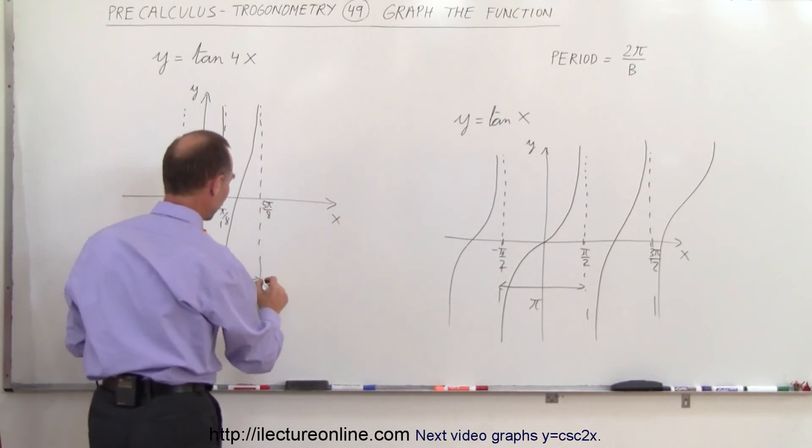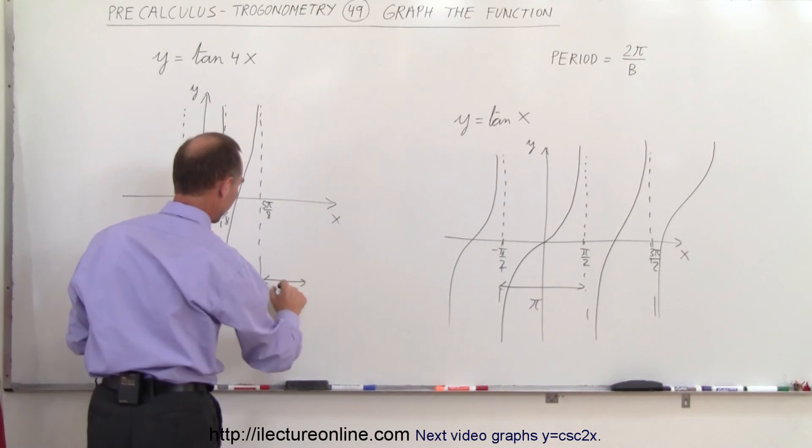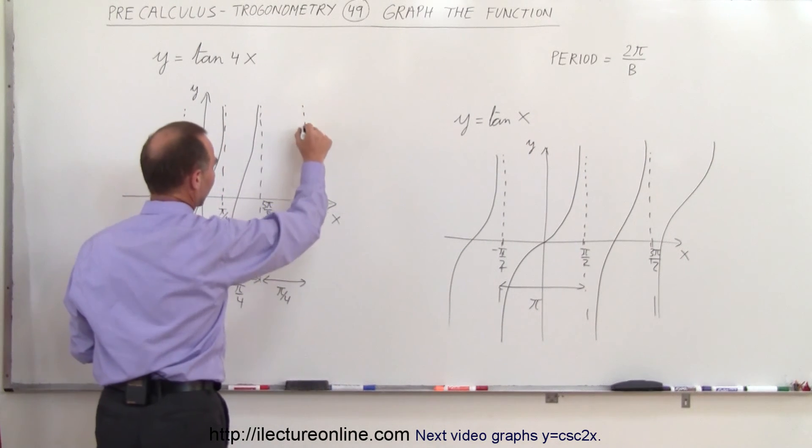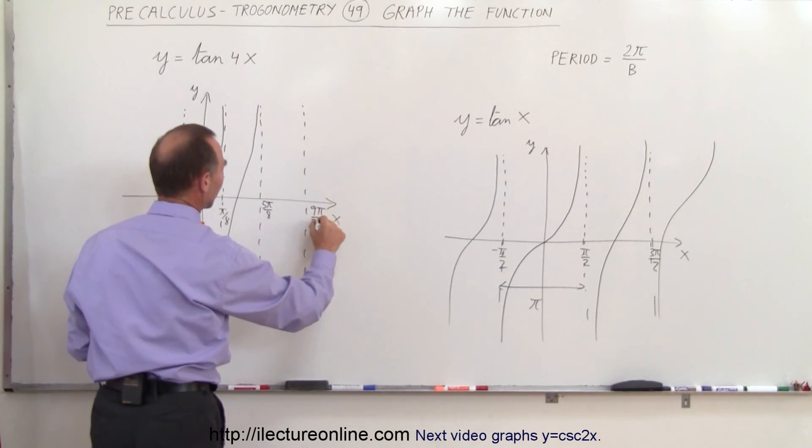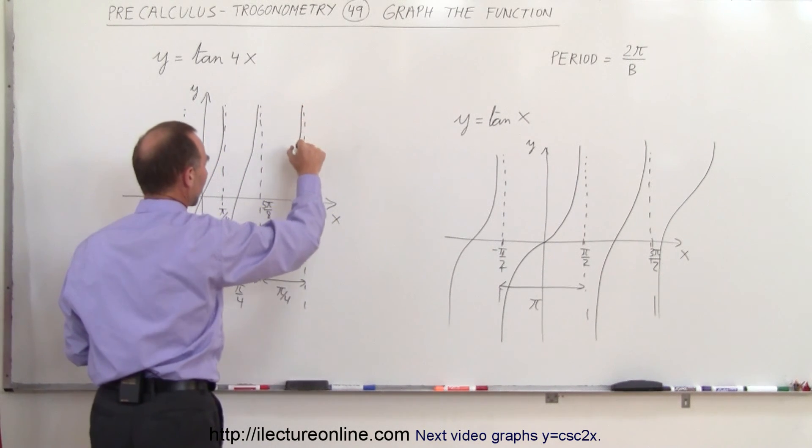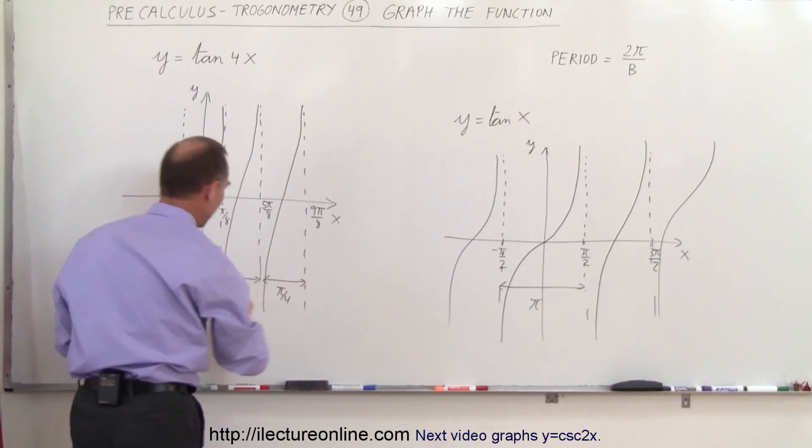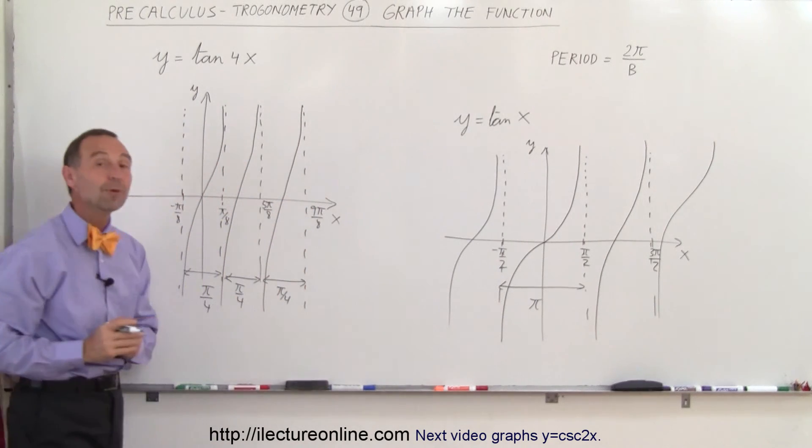and draw another asymptotic line, so now we're at 9 pi over 8, and now we have another part of the function like that, and continue on like that in both directions,